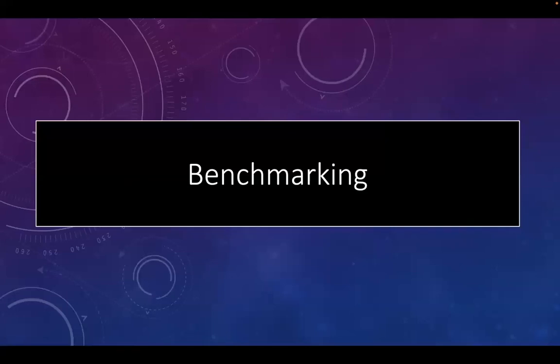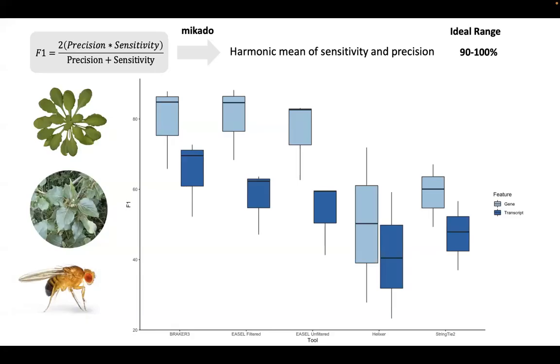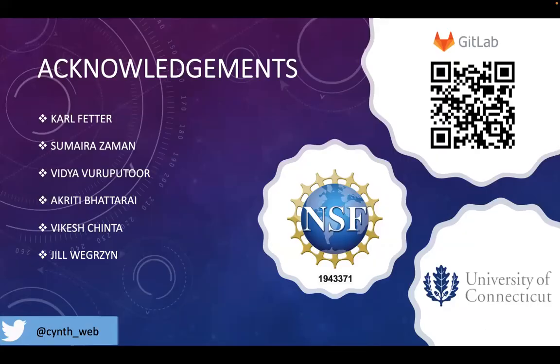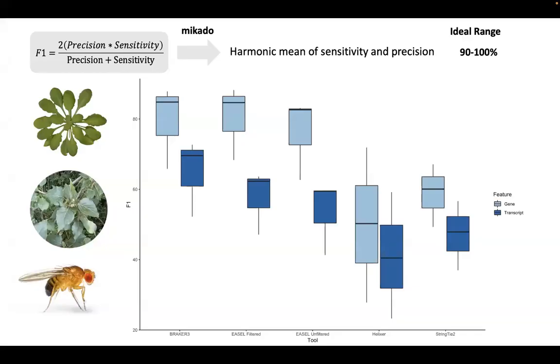So how do we compare to other tools? As you can see, Braker3 and EASL provide the best F1 scores at gene and transcript level when looking at Arabidopsis, Poplar, and Drosophila. And the filtered annotation is far better than the unfiltered.